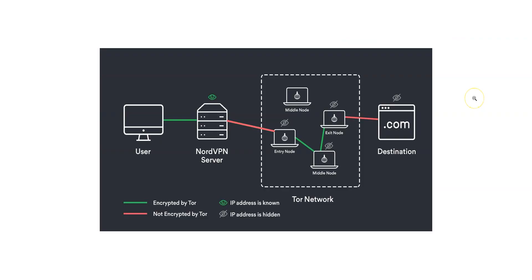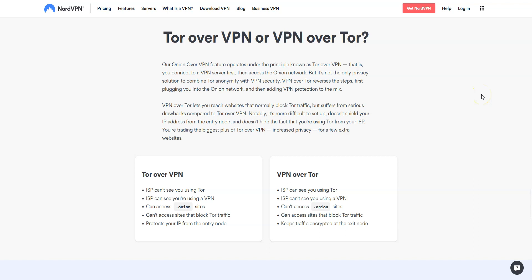You might be wondering whether it's better to use Tor over VPN or VPN over Tor. The Onion over VPN feature operates under the principle known as Tor over VPN: you connect to a VPN server first and then access the Onion network. That said, it is not the only privacy solution. VPN over Tor reverses the steps — first plugging into the Onion network and then adding VPN protection to the mix.